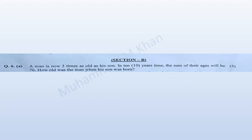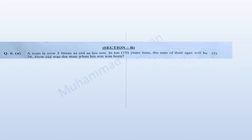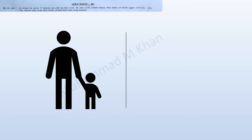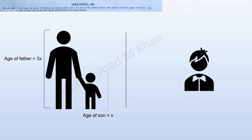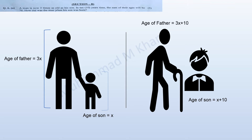Let me start with Question A, which is about mathematical questions. Part A states that a man is now three times as old as his son. If the age of the son is supposed to be x, then the age of the father will be 3x. In 10 years time, the sum of their ages will be 76. The age of the son will be x plus 10 and the age of the father will be 3x plus 10.